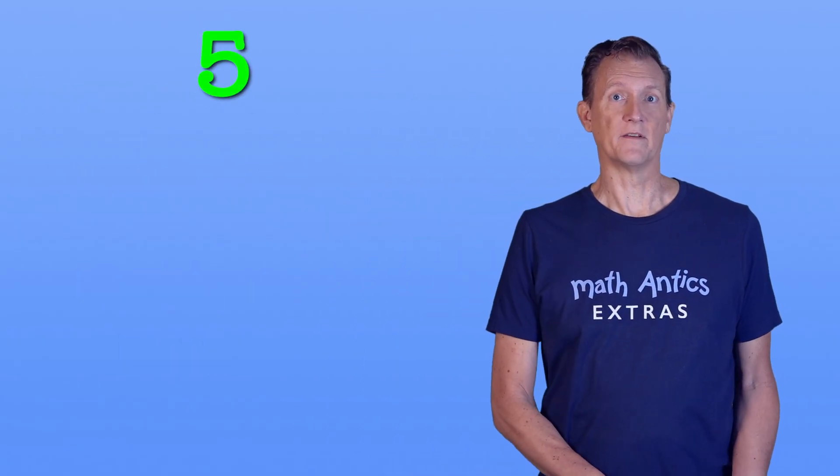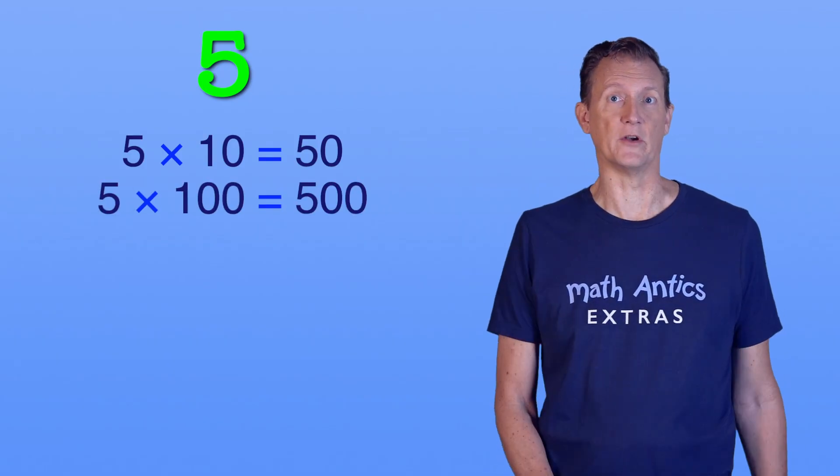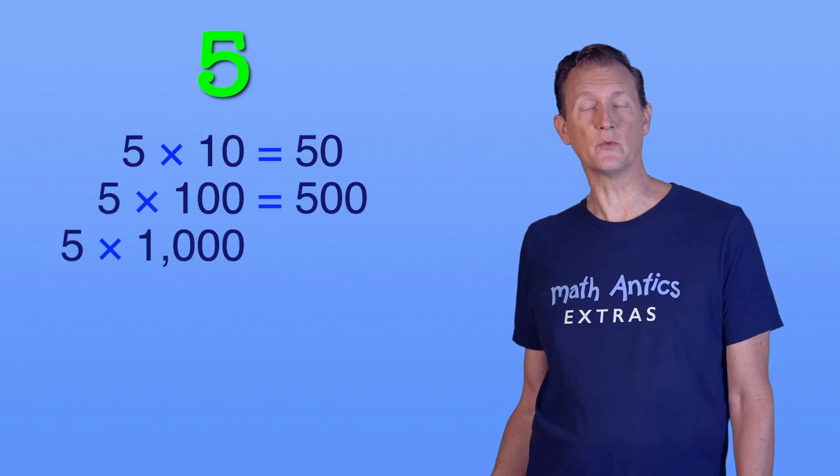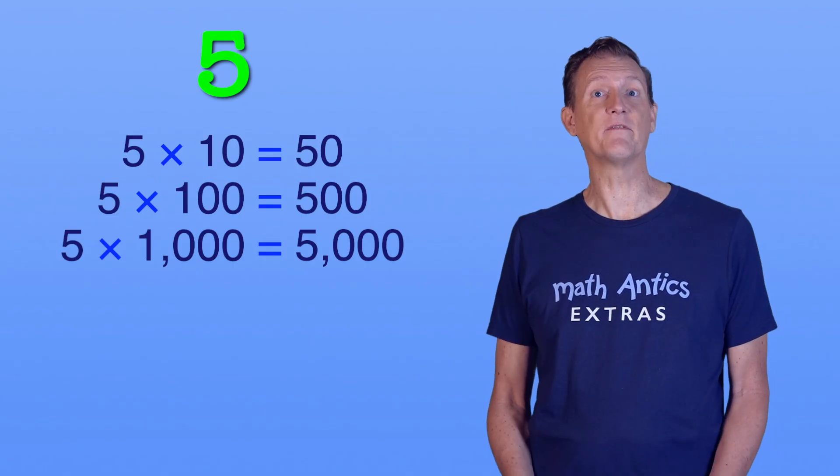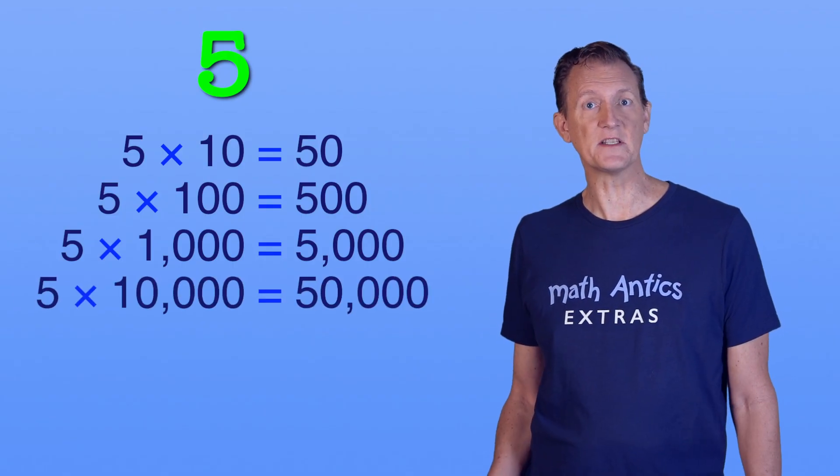we'll start with the number 5. If we multiply 5 by 10, we get 50. If we multiply 5 by 100, we get 500. If we multiply 5 by 1000, we get 5000. And if we multiply 5 by 10,000, we get 50000.